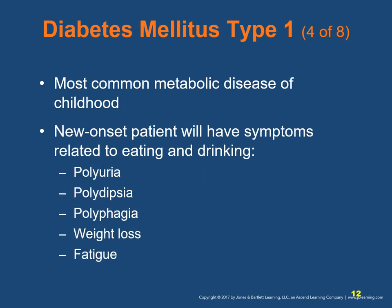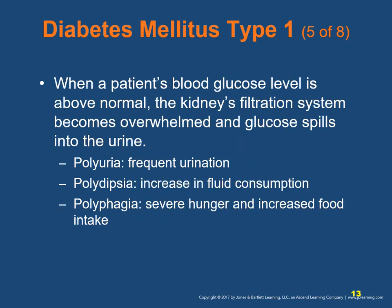Type 1 diabetes is the most common metabolic disease of childhood. A patient with new-onset type 1 diabetes will have symptoms related to eating and drinking: polyuria, polydipsia, polyphagia, and weight loss and fatigue. When blood glucose levels are above normal, the kidney's filtration system becomes overwhelmed and glucose spills into the urine. Polyuria is frequent urination, polydipsia is increased fluid consumption, and polyphagia is severe hunger and increased food intake.